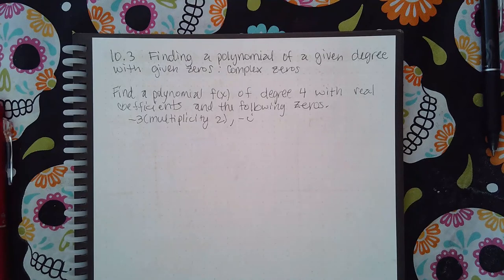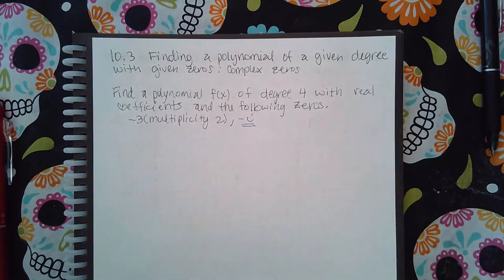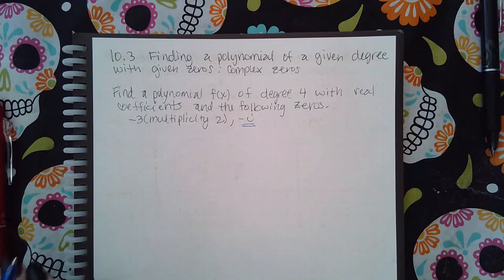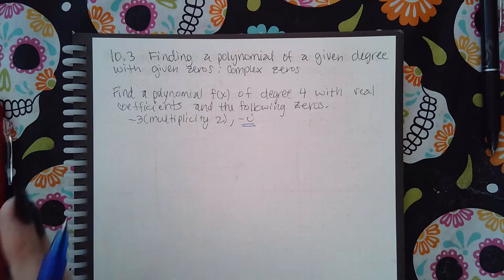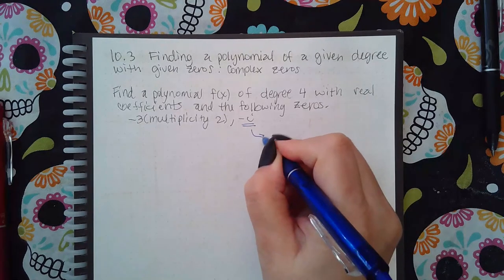In previous topics I've mentioned that the imaginaries come in pairs. Not only that, the pairs are conjugates. So what that means is if I have an imaginary zero, I automatically have its conjugate as well. Sometimes they'll give you the conjugate and that's great, but if they only give you one of the imaginaries and they don't give you the conjugate, you're gonna have to remember that the conjugate is also a value, it's also a zero.